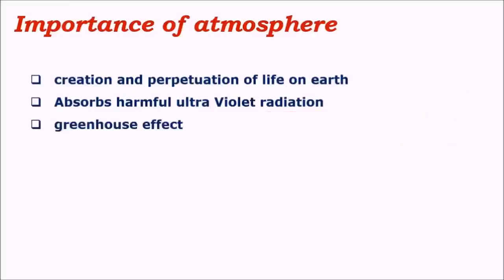Another important concept is the greenhouse effect. Greenhouse effect is a heat-trapping effect where heat-trapping gases like carbon dioxide (CO2), ozone (O3), methane (CH4), and mostly water vapour are present in the atmosphere. Most of these gases are present mainly in the bottom layers of atmosphere like the troposphere and stratosphere, and they are important in maintaining constant temperatures on earth.